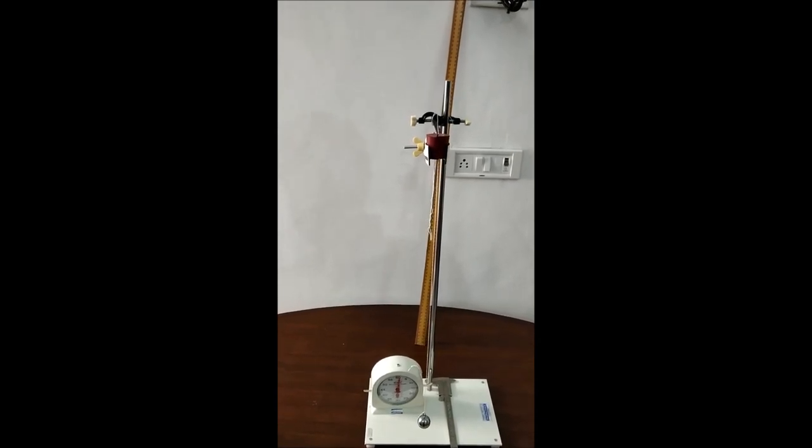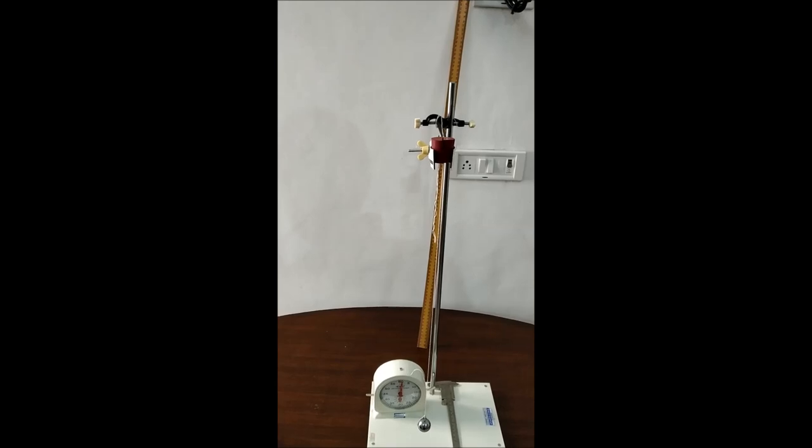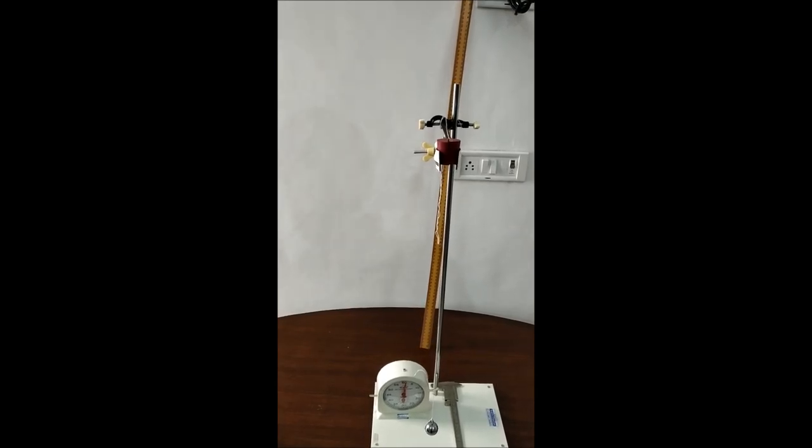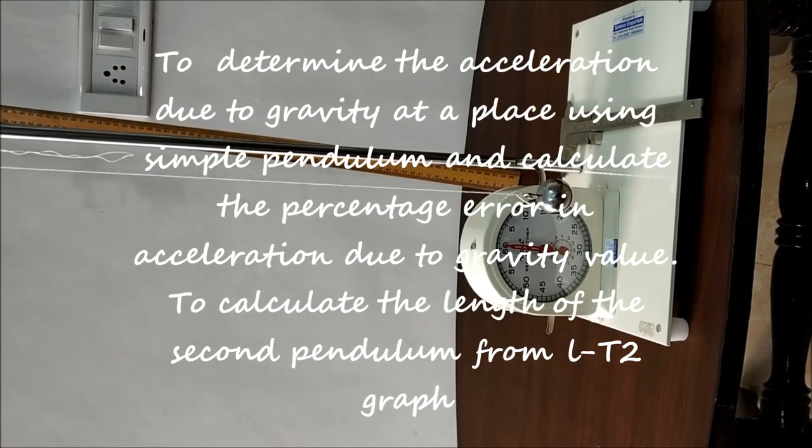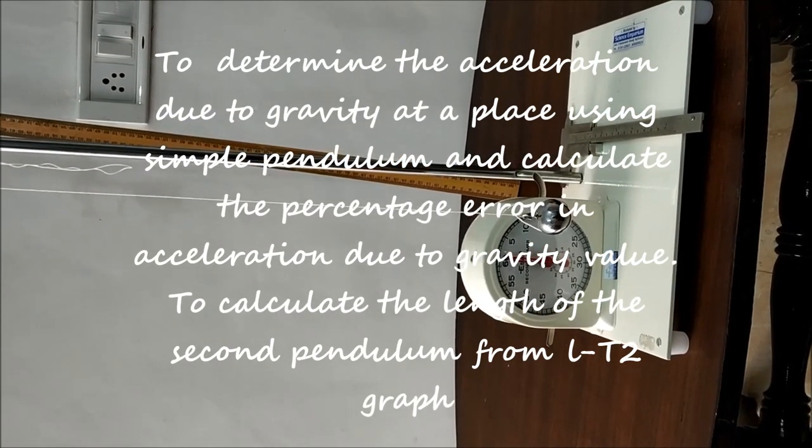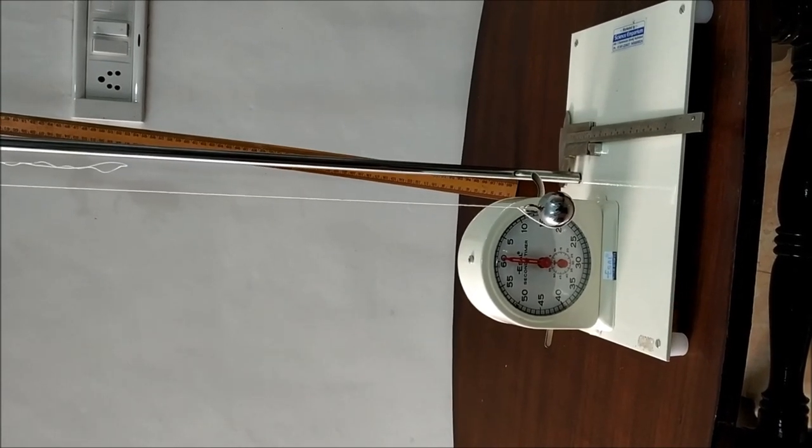To find the acceleration due to gravity by measuring the variation in time period T with effective length L of simple pendulum. Or to determine the acceleration due to gravity at a place using simple pendulum and calculate the percentage error in acceleration due to gravity value.